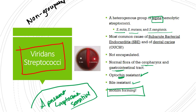The viridans streptococci are actually the most common cause of subacute bacterial endocarditis (SBE). They also create dental caries, which are painful but normally not life-threatening unless they become an abscess. They cause disease because they're exceptionally good at sticking to slimy, slick surfaces like damaged heart valves or teeth. S. sanguinis specifically makes dextrans, which bind to fibrin-platelet aggregates found on damaged heart valves.